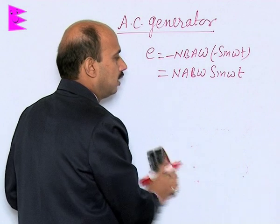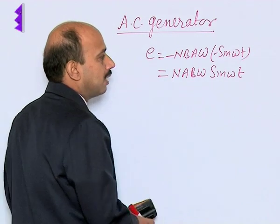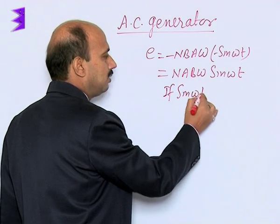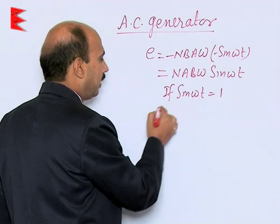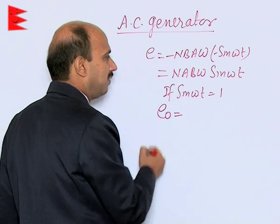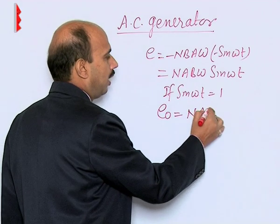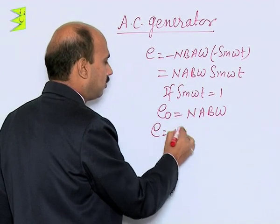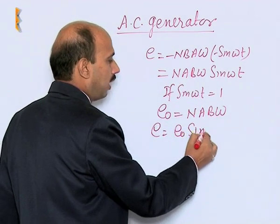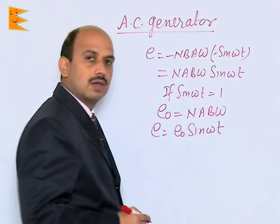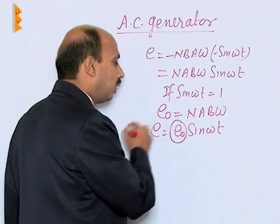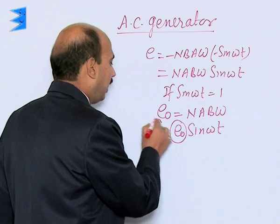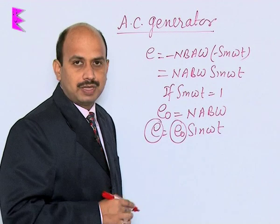When sin ωt is maximum, that is equal to 1, we can write the maximum EMF E₀ = NABω. This equation can then be written as E = E₀ sin ωt. Here E₀ is known as the peak value or maximum value of EMF, and E is known as the instantaneous value of EMF.